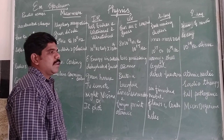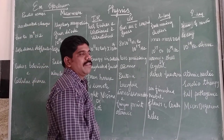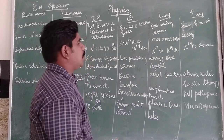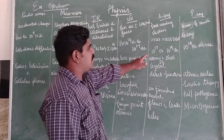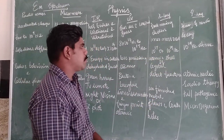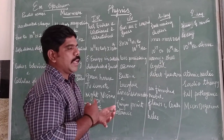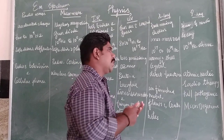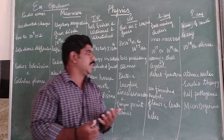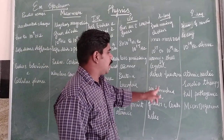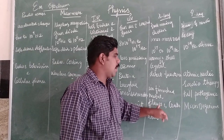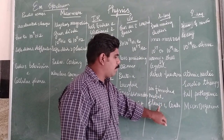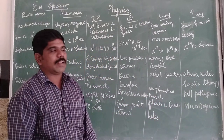X-rays are also used to find flaws, cracks, and holes in finished metals for material inspection purposes.